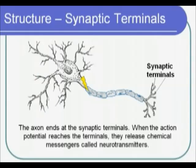The axon ends in what is called the axon terminal or synaptic terminal. The axon terminal can branch off and form thousands of connections to thousands of other neurons.